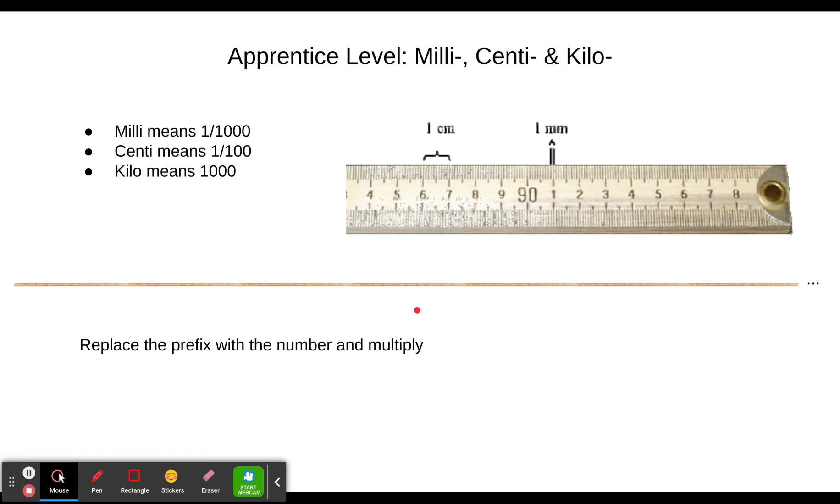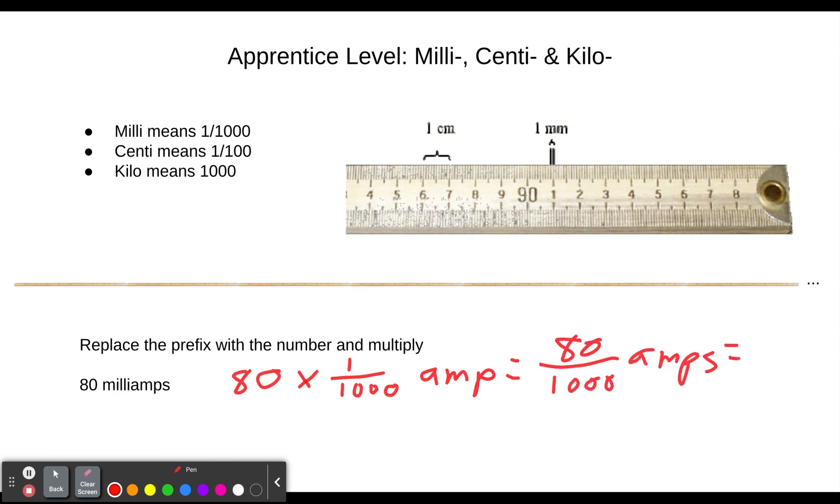So the basic idea is you replace the prefix with the number and multiply. So for example, if you had 80 milliamps, you would just take 80. And then milli means times one over one thousand. So 80 times one over a thousand. You could also write 80 over a thousand. At this point, depending on your comfort level of the math, you can either take out your calculator or recognize that since you're dividing by a thousand, that's three zeros. That means you're going to move the decimal place to the right three times. So we'd get 0.08 amps. If you need to take out your calculator to do that kind of calculation, do it.